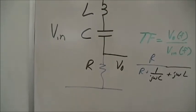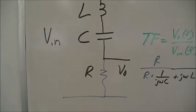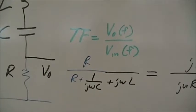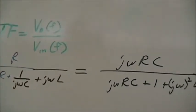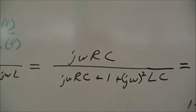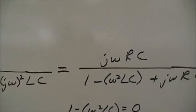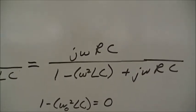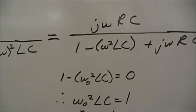So the next circuit, we will now put the L and C in series with the R to make an RLC circuit. Transfer function development is the same. Now we have R over R plus 1 over jωC plus jωL. That becomes jωRC over jωRC plus 1 plus jω²LC. If we collect the real and imaginary terms, we get jωRC over 1 minus ω²LC plus jωRC.